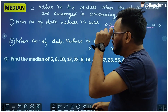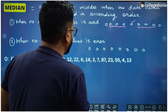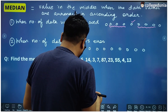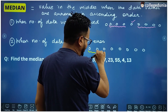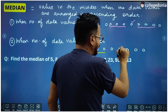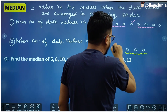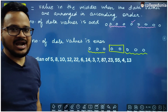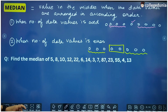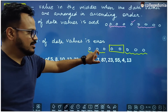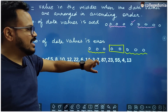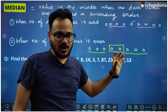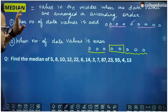So what we do when the number of data values is even: we leave an equal number of values from both sides, but that leaves two values at the middle position. So to find the median in this case, we take the mean of those two values.